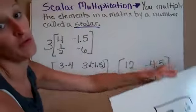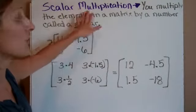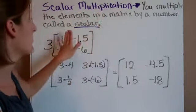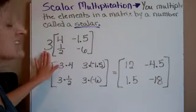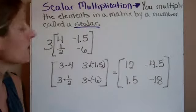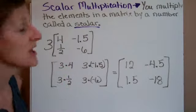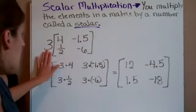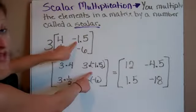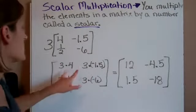You can also multiply a matrix by a number. It's called scalar multiplication, where you multiply the elements in a matrix by a number called a scalar. On this one, this 3 would be our scalar in this problem. What I'm going to do is use the distributive property to solve this. Every element in here is going to get multiplied by 3. So you're going to do 3 times 4, 3 times negative 1.5, 3 times 1.5, and 3 times negative 6.